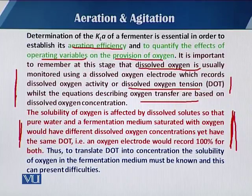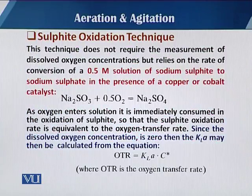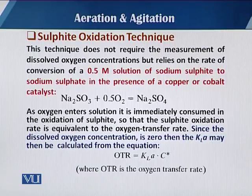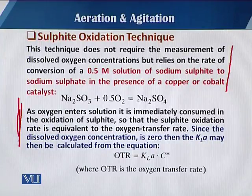The DOT in concentration — the solubility of the oxygen in the fermentation medium — must be known, and this can present different difficulties. The sulfite oxidation technique is also available to measure the dissolved oxygen. This technique does not require any measurement of the dissolved oxygen directly but relies on the rate of conversion. It is a chemical method mostly used in environmental experiments to determine dissolved oxygen present in different water bodies such as lakes.